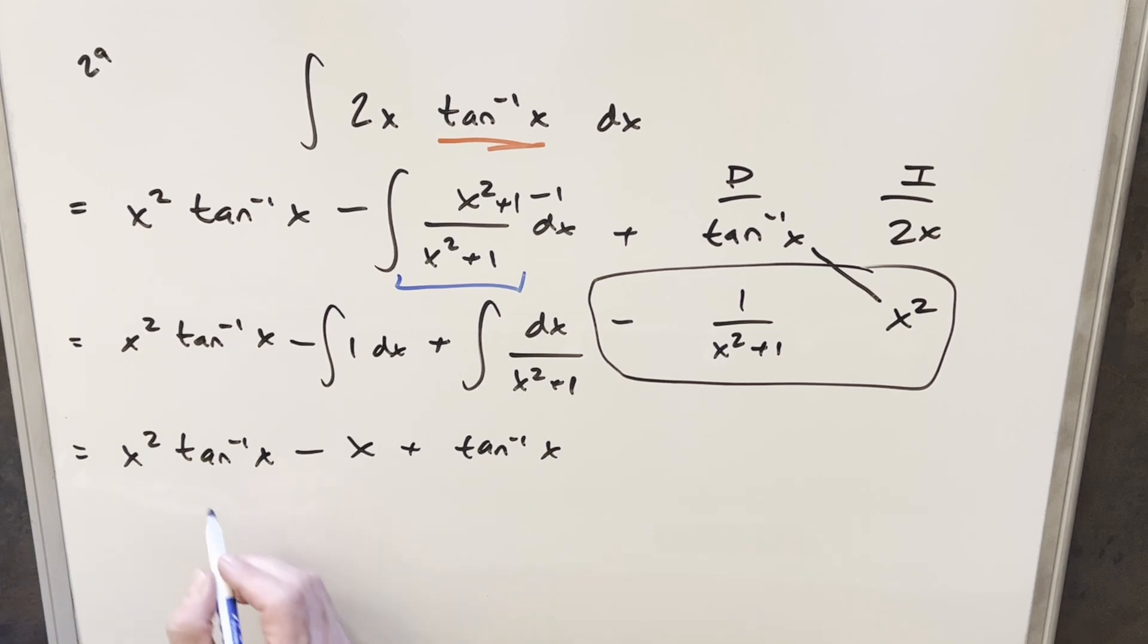And then before finishing it, we'll just notice that we have Arctan in common here. So I can put these two together. And so for my final solution, I'll write this as x squared plus 1 Arctan of x minus x plus c. And that's it.